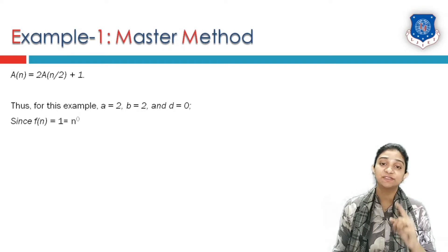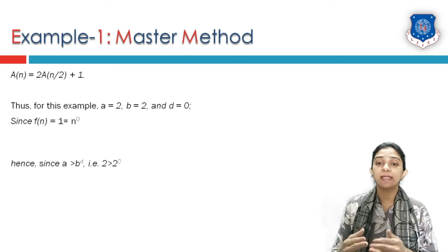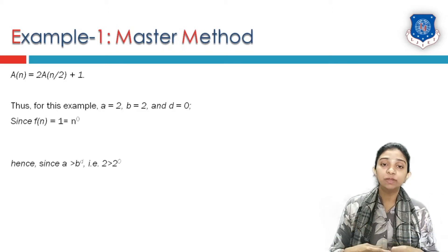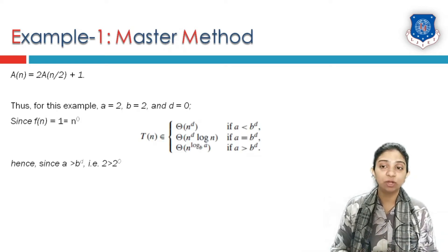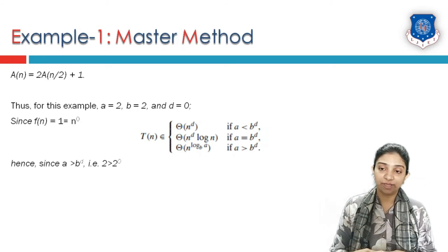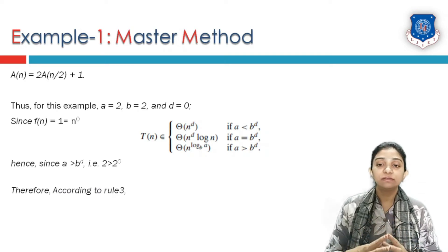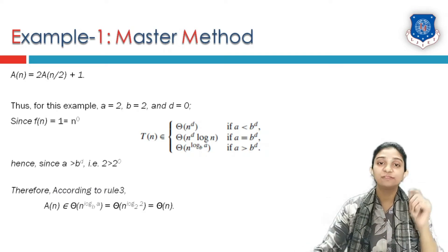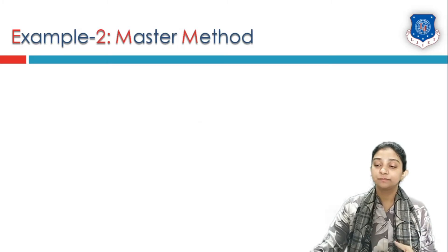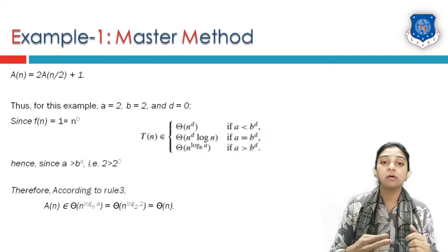Since f(n) = 1 = n^0, we compare a = 2 with b^d = 2^0 = 1. Since 2 > 1, we apply Case 3 where a > b^d. Therefore T(n) = Theta(n^(log_2(2))) = Theta(n^1) = Theta(n). So the final answer is T(n) = Theta(n).